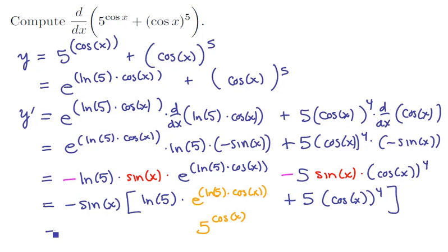And so now we can bring the rest of it in here. We've got negative sin of x times the quantity ln of 5 times 5 to the cos x plus 5 times the quantity cos of x to the 4th power. And this is the derivative for this particular function.